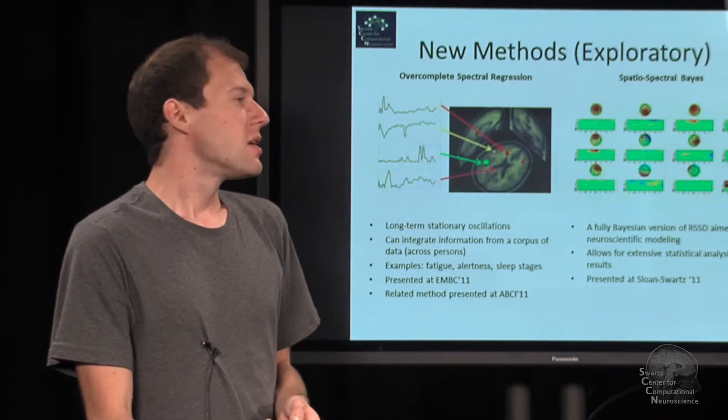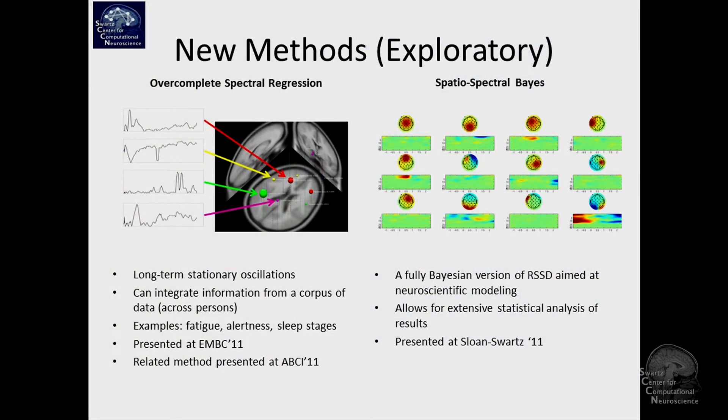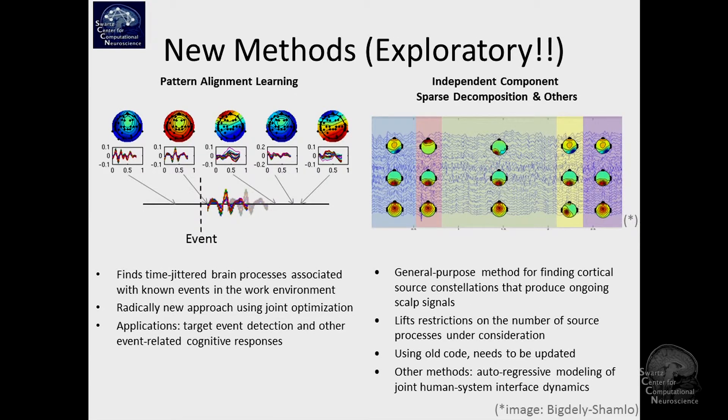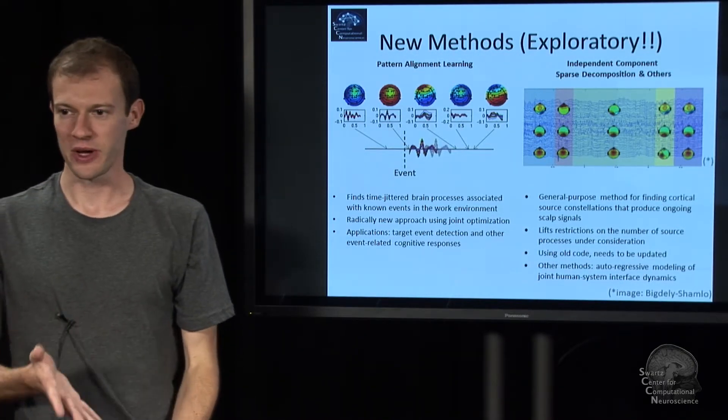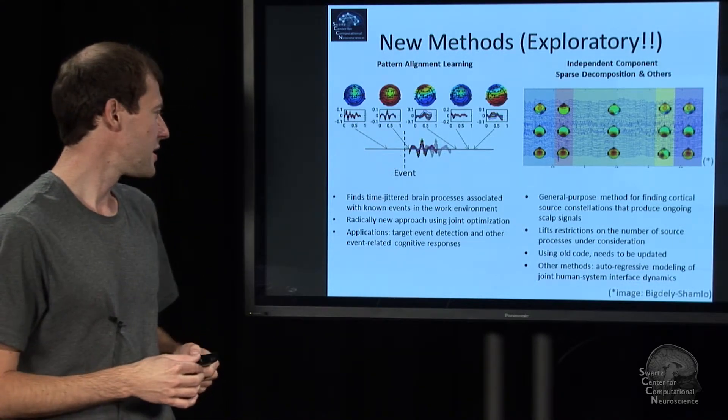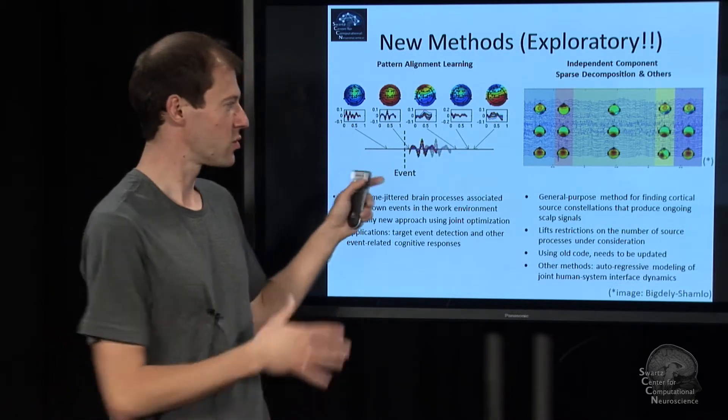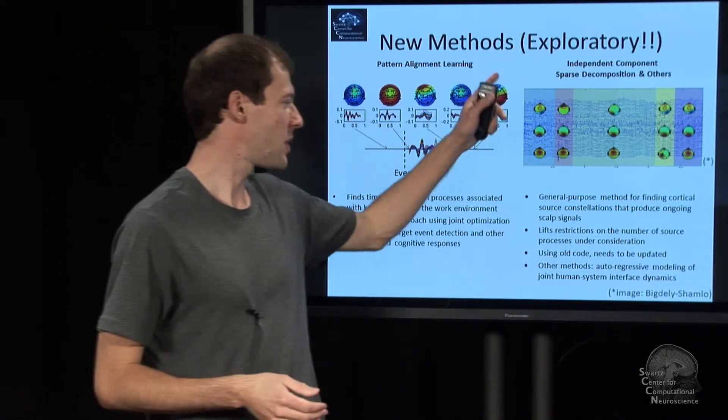There are a few exploratory methods. For example, there is a method that finds multiple spectral processes, learns their spectral profiles, and localizes them in brain space under the assumption that the underlying oscillation is stationary. There's a Bayesian version of RSSD and some methods that are even more exploratory that will be in version 1.2 and onwards, such as trying to find ERP processes that are jittered in time across multiple realizations, which is actually really hard to deal with. There's a bunch of methods based on independent component analysis, which is one of the strengths of this lab.